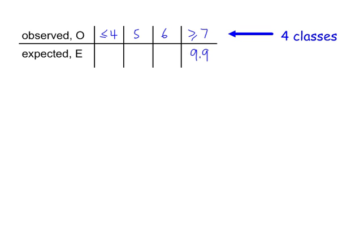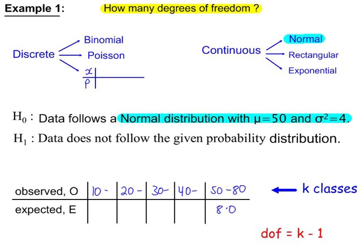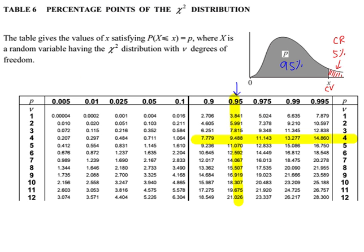Example 1: we're testing whether the data follows a normal distribution with assumed parameters. This gives k minus 1 degrees of freedom, so with 5 classes that's 4 degrees of freedom. Working at a 5% significance level — 5% in the critical region, 95% in the acceptance region — with p = 0.95 and 4 degrees of freedom, we obtain our critical value.